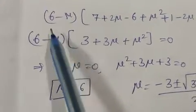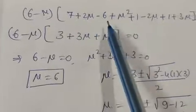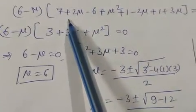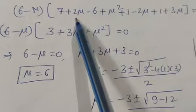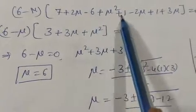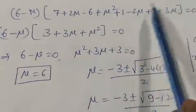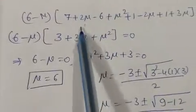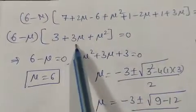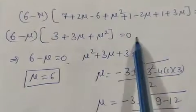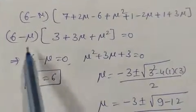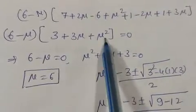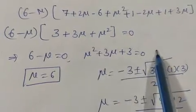Simplifying, (6-mu) times (3 + 3mu + mu²) equals 0. This gives two factors: (6-mu) equals 0 and mu² plus 3mu plus 3 equals 0.